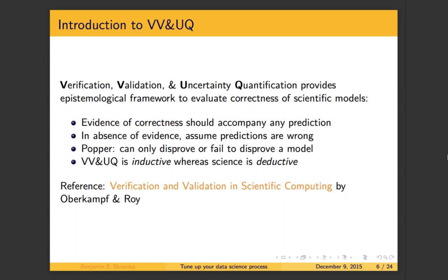We can't prove that our model is correct, so we proceed inductively, providing evidence until we have high confidence that our model is correct. For more details, see the reference I've provided by Oberkampf and Roy. It's an awesome book — even though it's Springer Verlag, it's super accessible and well written. It has a nice history of VV&UQ and additional tips for those working with models involving integral and differential equations.